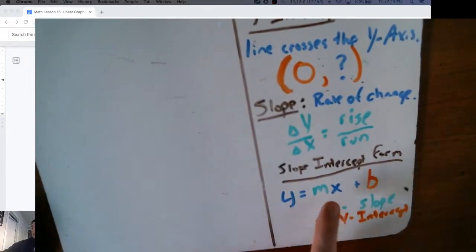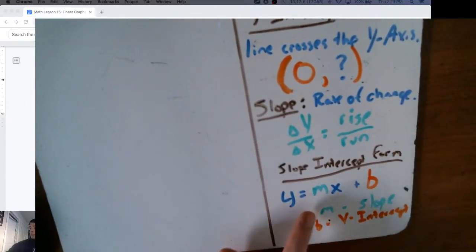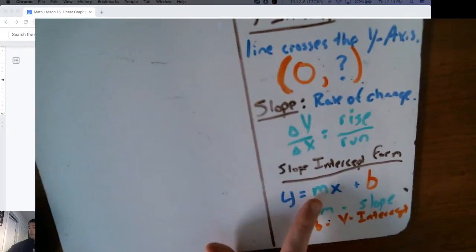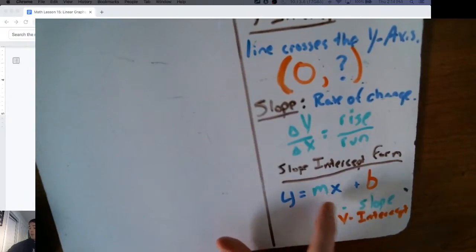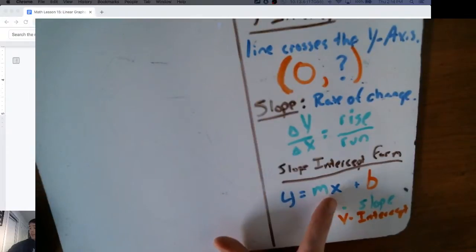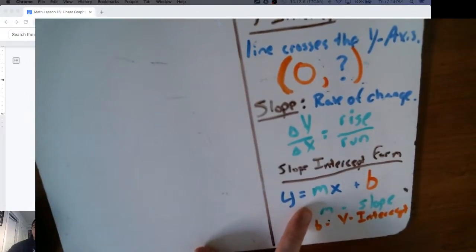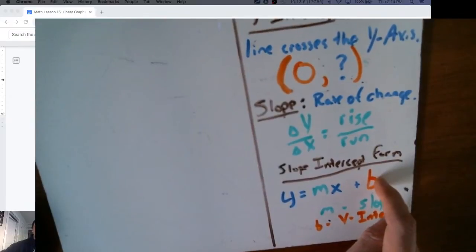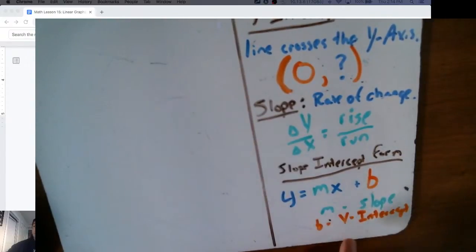Whatever number is multiplied with x — what I've put in green — that's going to be m, the slope. Mr. Neville would have used the term 'coefficient' to describe the number that multiplies with x. So whatever the coefficient of x is, that's m — it will represent your slope always. And whatever number is added or subtracted all by itself — the b — that represents your beginning point, or your y-intercept.